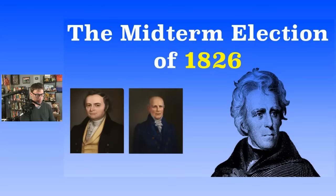On the right is Nathaniel Macon, who was Speaker of the House for many years. He got a lot of electoral votes in one of those elections. On the left is the last Speaker of the House against Jackson — the anti-Jacksonian or Adams Republican, John W. Taylor. But his party would lose in the House, and there'd be a new Speaker of the House after 1826.